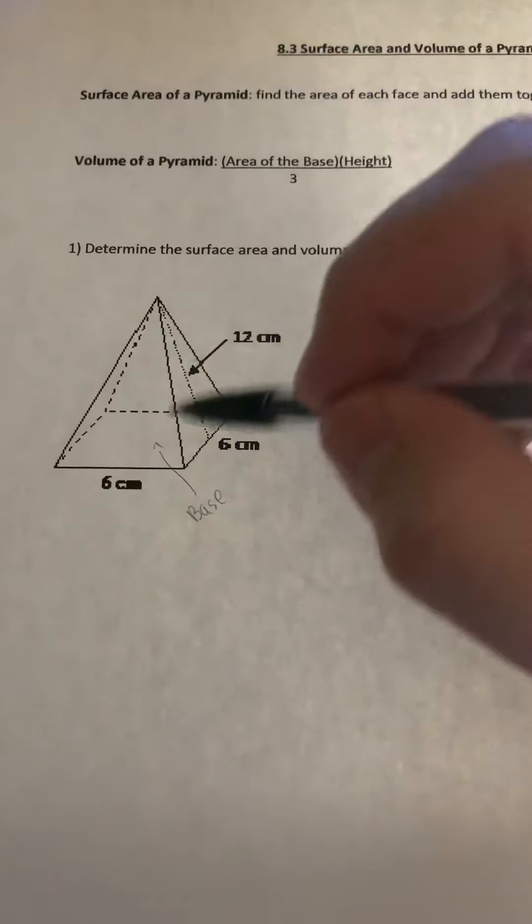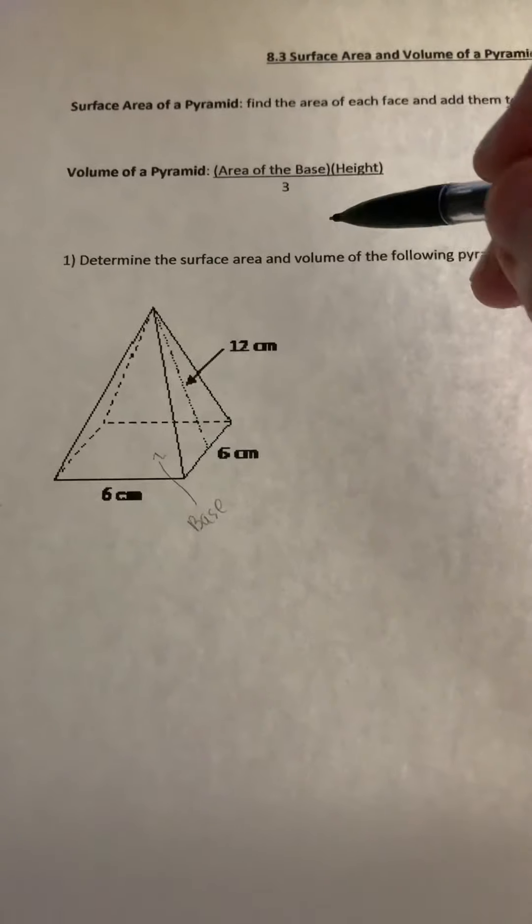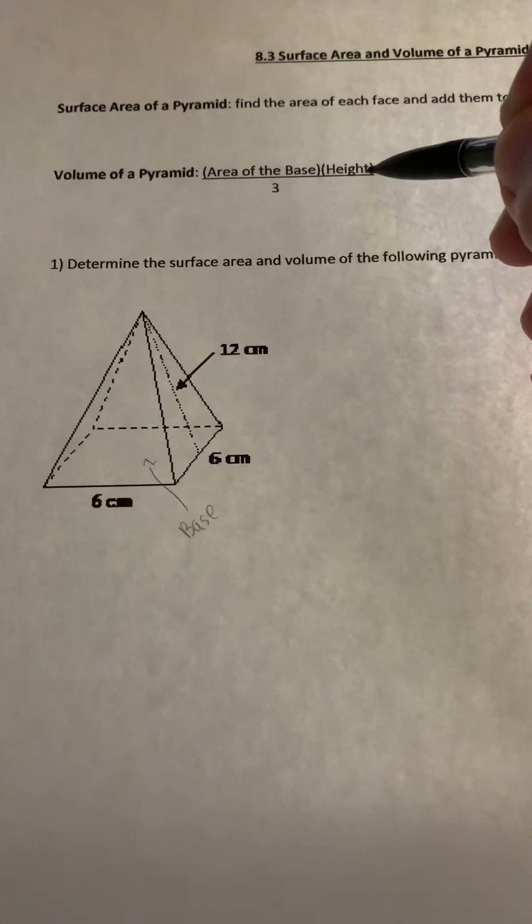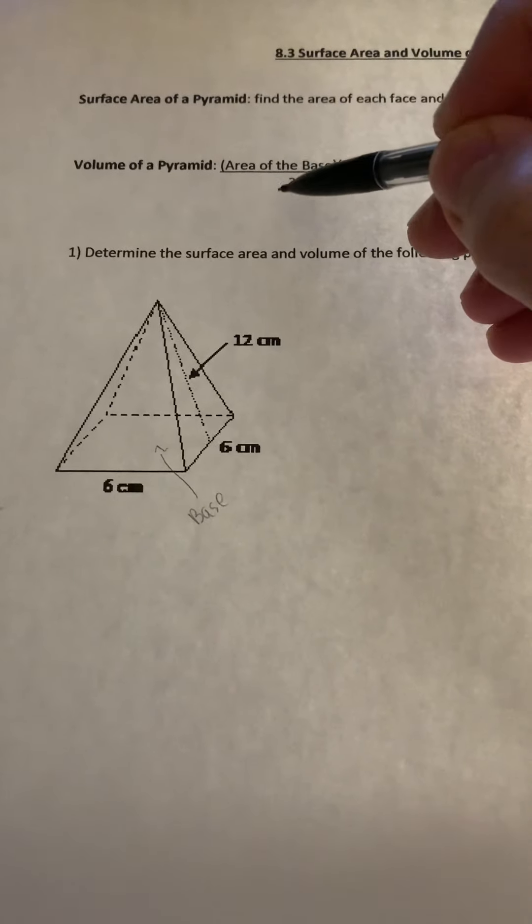So what we do is you find the area of that base, or in this case the square, multiply it by the height of the pyramid, and then divide by three. For all pyramids we always divide by three.